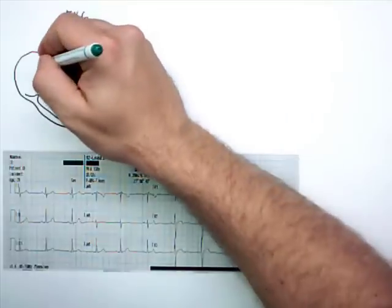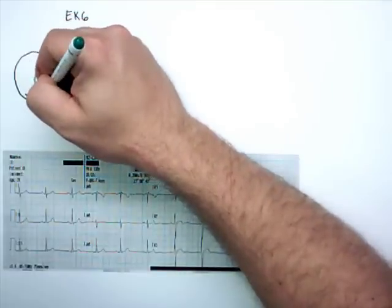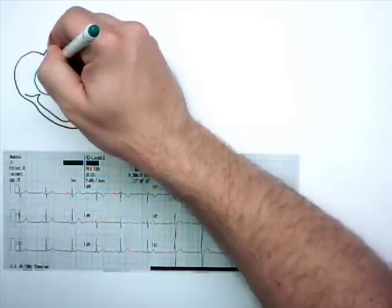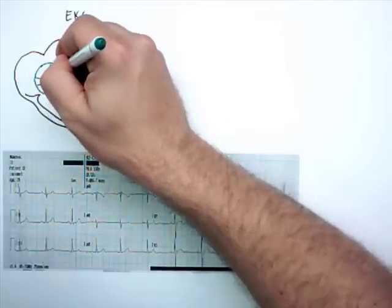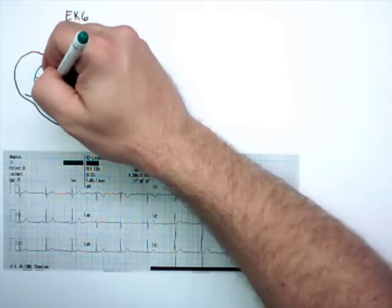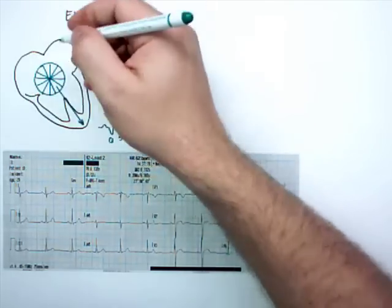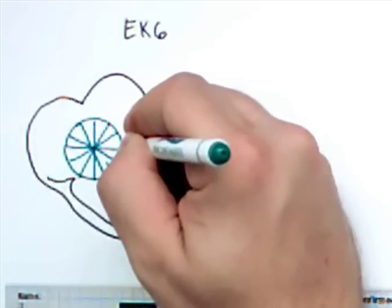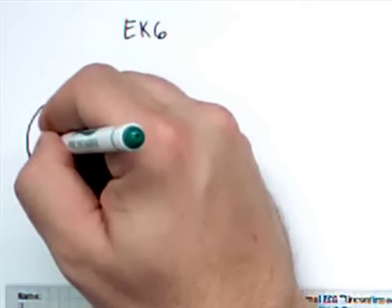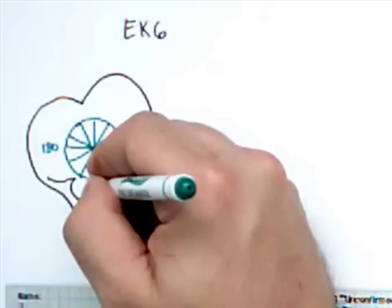Now, one of the things that we have to clarify is, we've talked about Einthoven's triangle and we've talked about the augmented leads. Sometimes those leads are expressed radially. We have to talk about that now, because we want to understand when I say something's at zero degrees or something's at 180, what we're talking about.